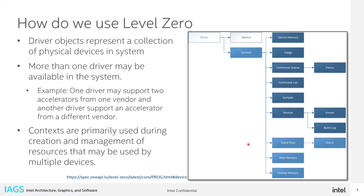The way that you use Level Zero is with the objects shown here. Usually you start with the driver, which is implemented for an accelerator device in your system for a specific vendor. For example, if you have two GPUs from one vendor and one FPGA from another, you could have two drivers discovered by the Level Zero loader. That driver comprises a device and a context. You create a context to start managing resources — memory, images, queues, lists, events — for a given set of devices.